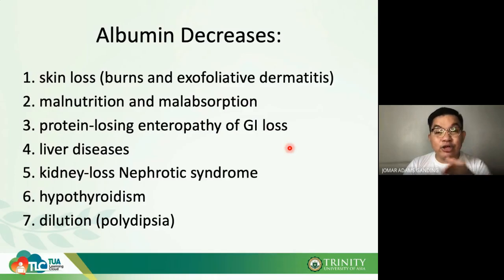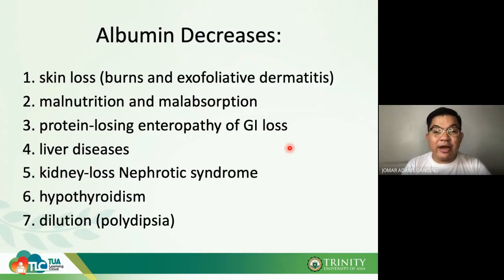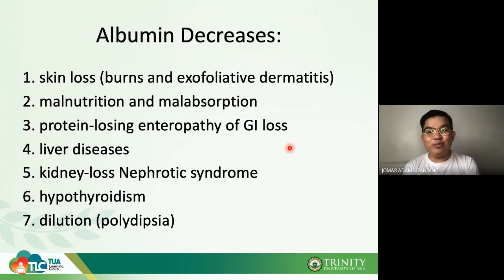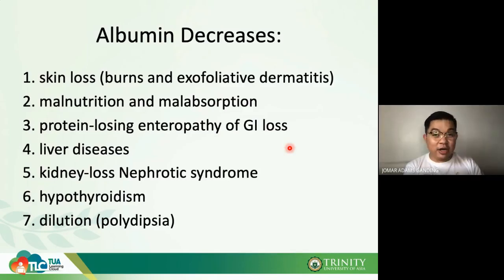A more sensitive test for protein in urine is microalbumin. The presence of microalbumin in urine is called microalbuminuria. Albumin also decreases in hypothyroidism and in dilution due to polydipsia — excessive water intake dilutes the blood.